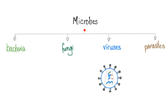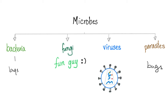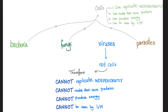We divide microbes or microorganisms into bacteria, fungi, viruses, and parasites. The public refers to bacteria as bugs, but technically bugs are only parasites — they are a subgroup of parasites. First, what does virology mean? 'Ology' means a study of, and 'vir' is viruses. So virology is the study of viruses.